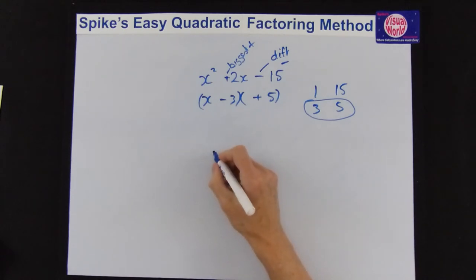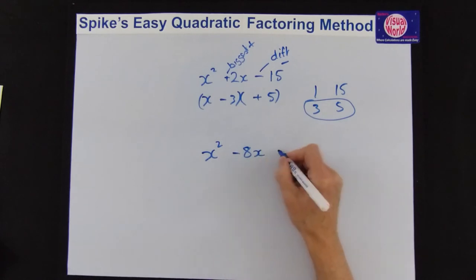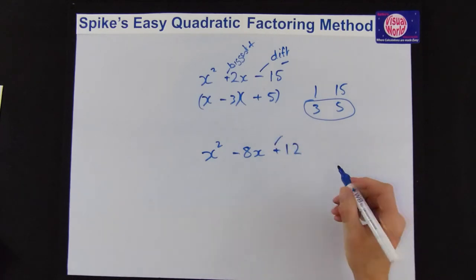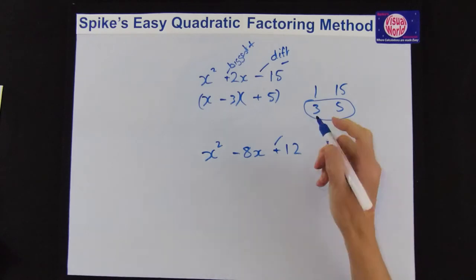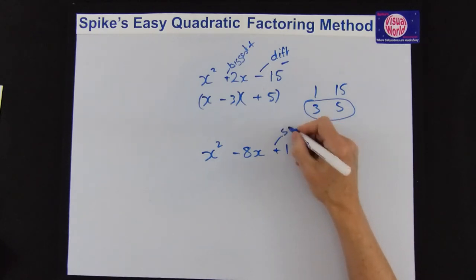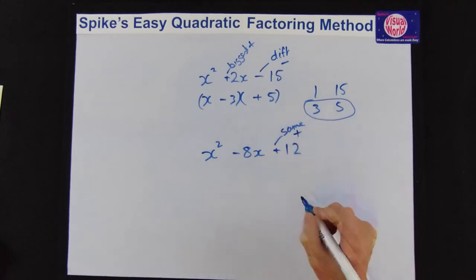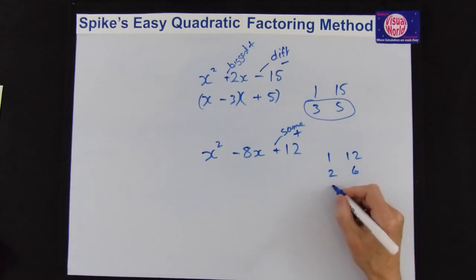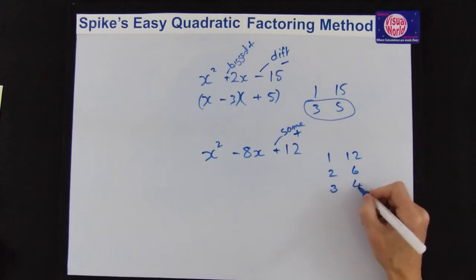Last example before we give you something to do it yourself, x squared minus 8x plus 12. So the last one this time's a plus, so to get a plus, there's got to be either 2 minuses or 2 pluses to multiply to give you a plus. So that means they're the same, and we're adding. Factors of 12, it's 1 times 12, or 2 times 6, or 3 times 4.